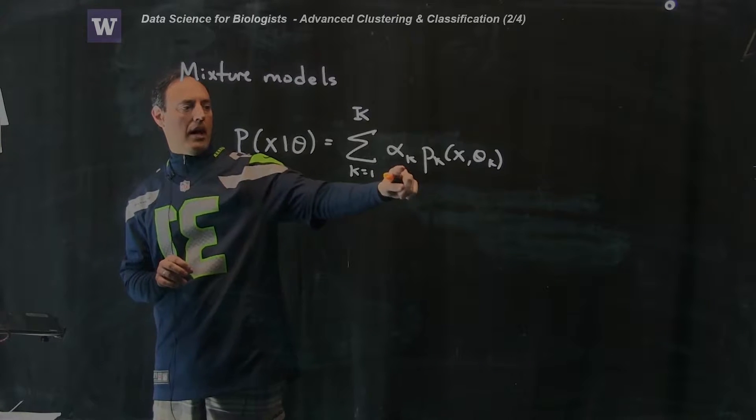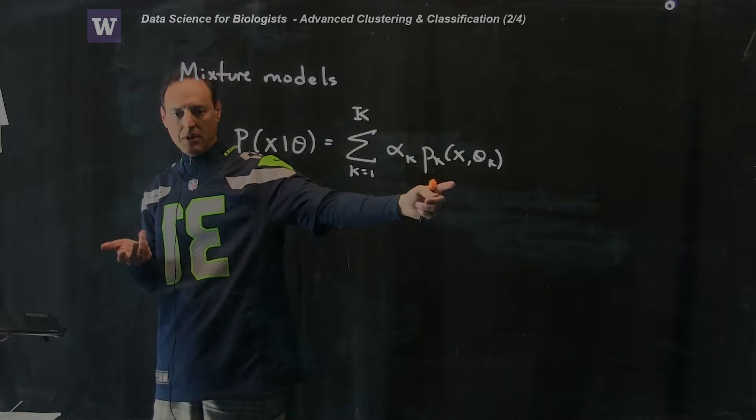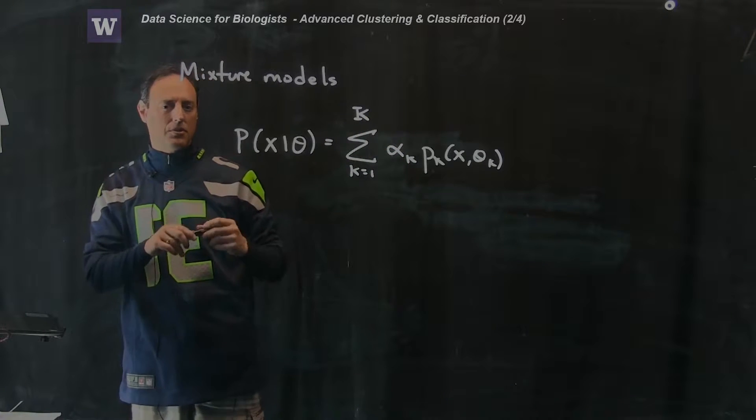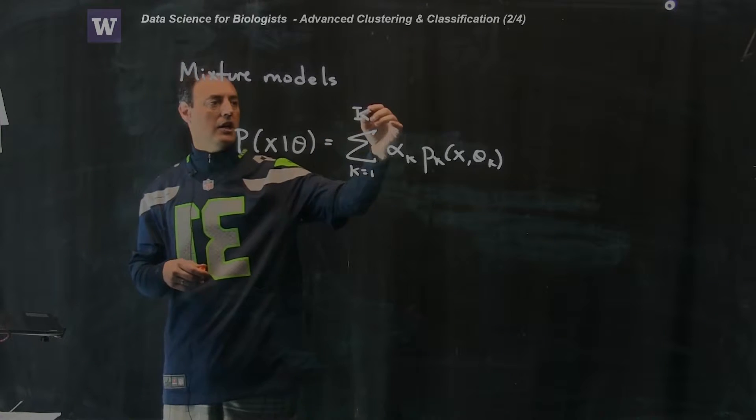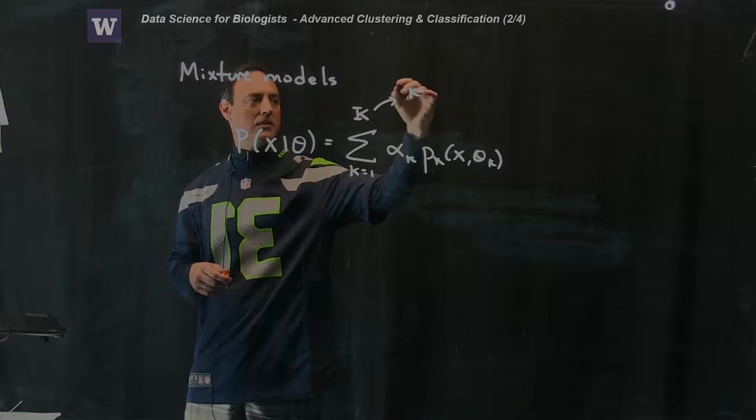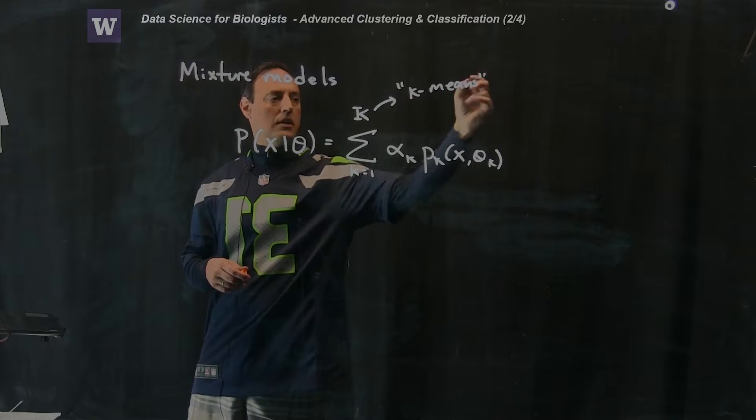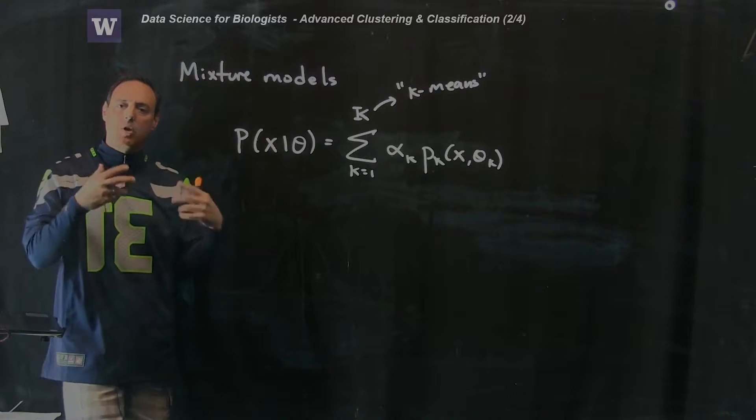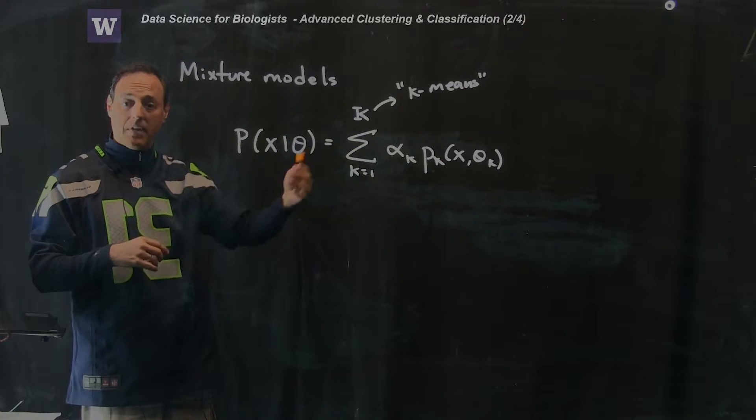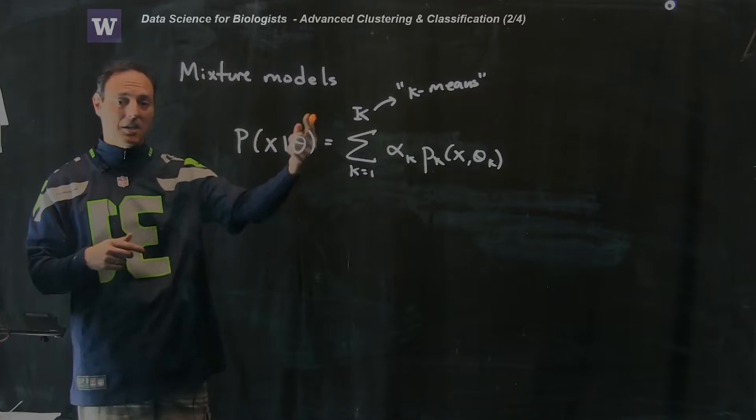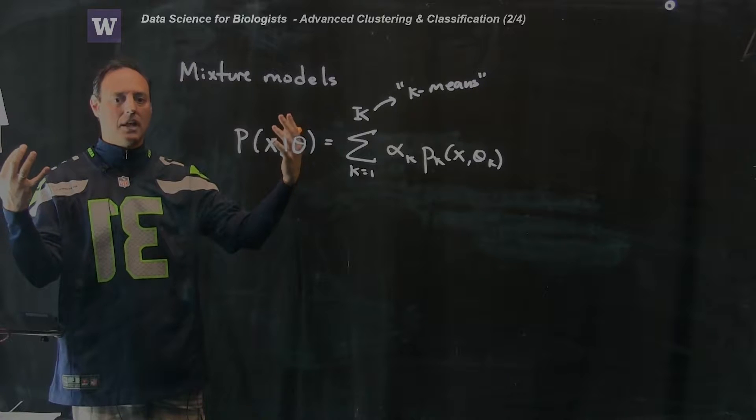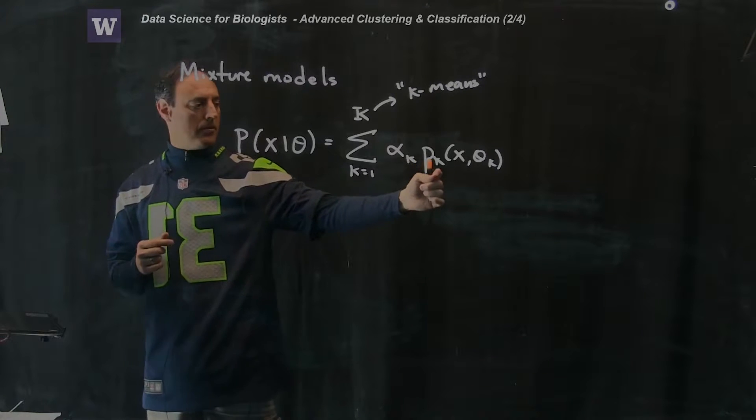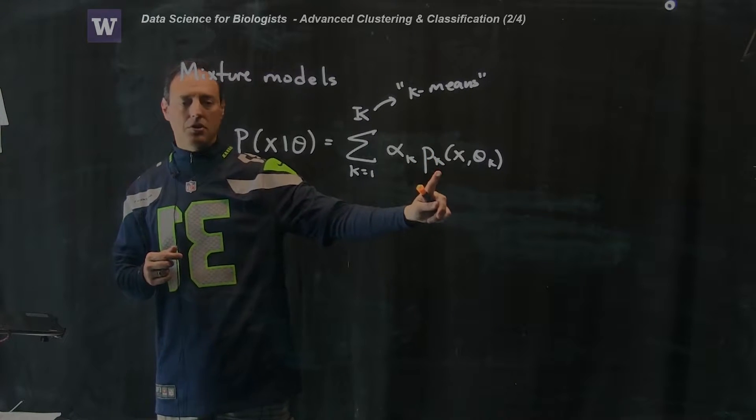So let's kind of get our heads around this. What it says is, I want the probability distribution of all my data, and what I'm going to assume is my data is a sum of a bunch of underlying probability distributions. So, in other words, I'll have alpha 1 p1, plus alpha 2 p2, plus alpha 3 p3. And this here, K, is the number of clusters, or number of probability distributions in the model.